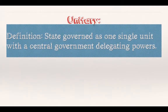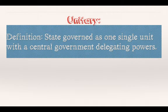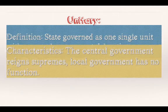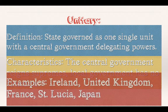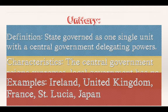A unitary government is a state governed as one single unit, with a central government delegating powers to other parts of the country. The central government reigns supreme, with local government serving little function. Examples include Ireland, the United Kingdom, France, St. Lucia, and Japan. St. Lucia is a small example with one central government. France is a large example where the central government makes decisions affecting towns and local municipalities — those municipalities have some power, but not a tremendous amount.